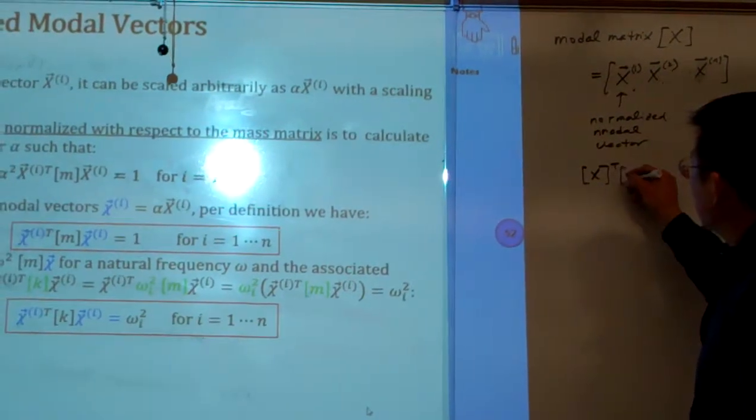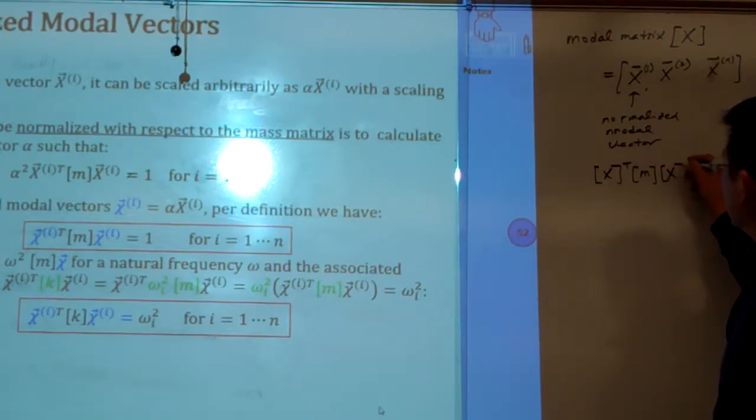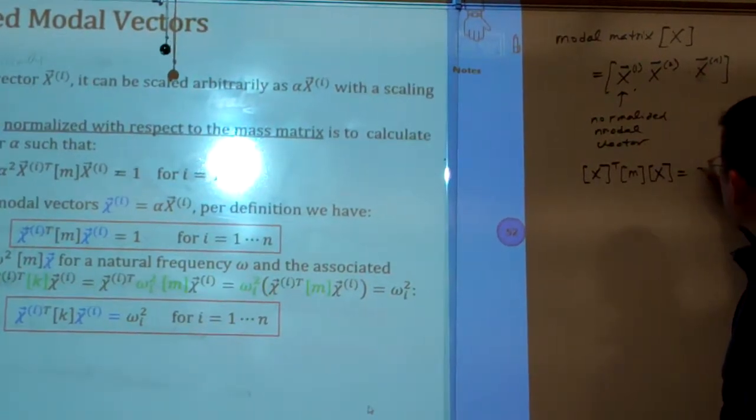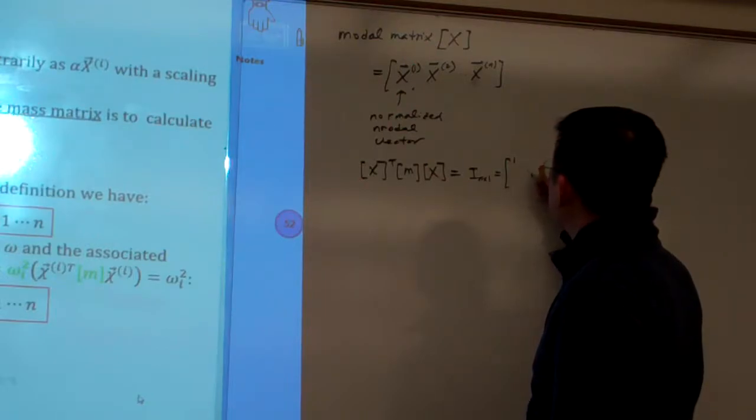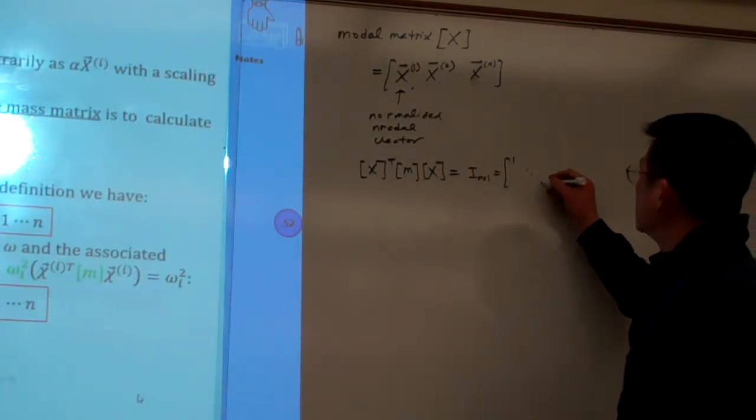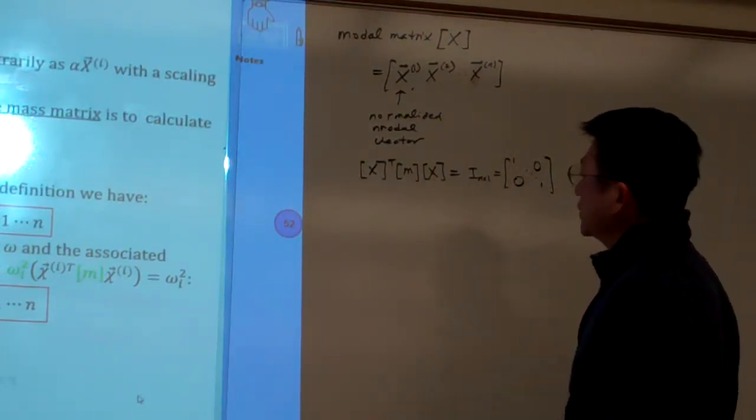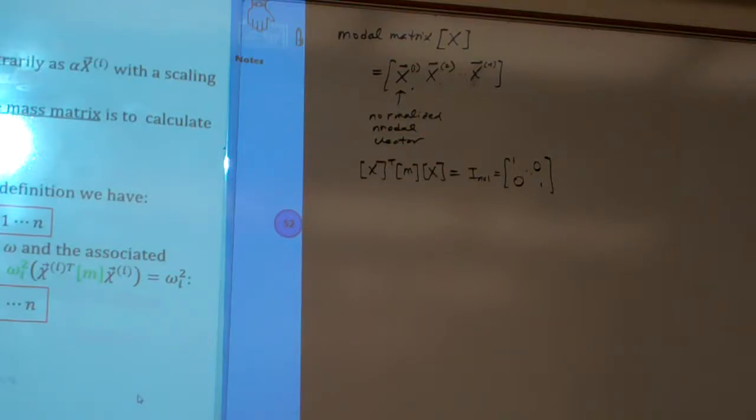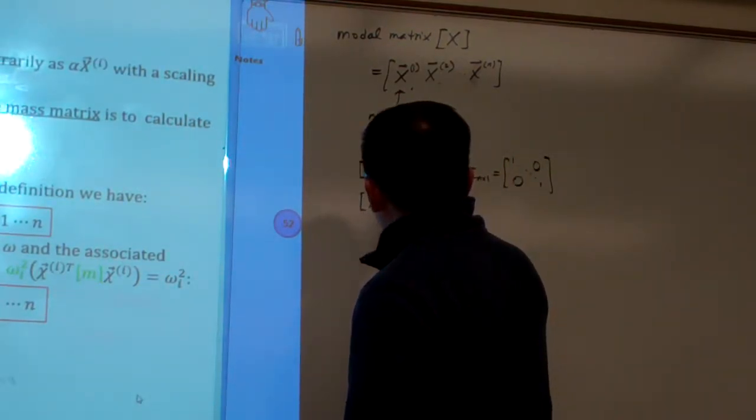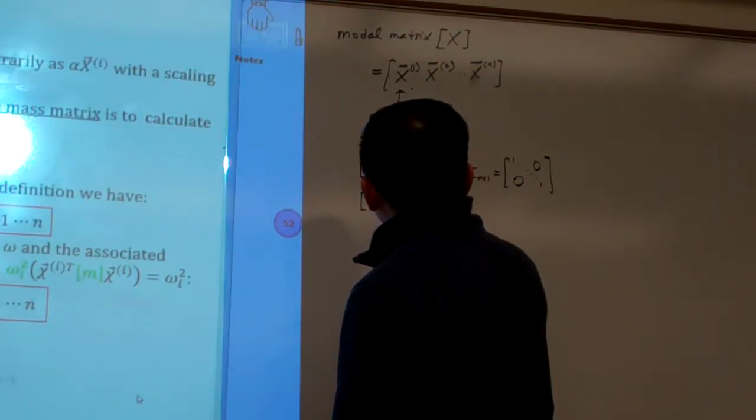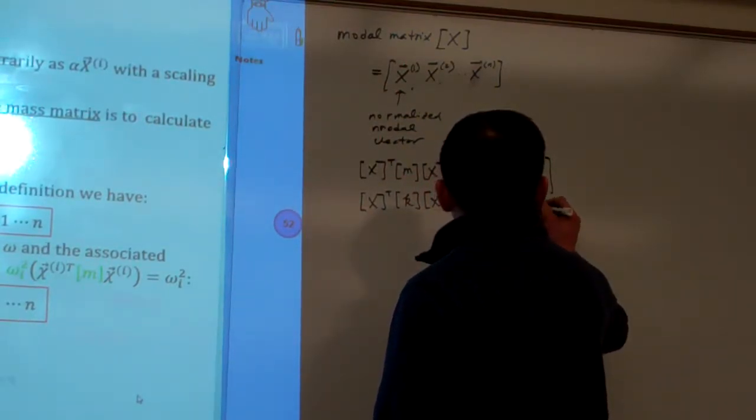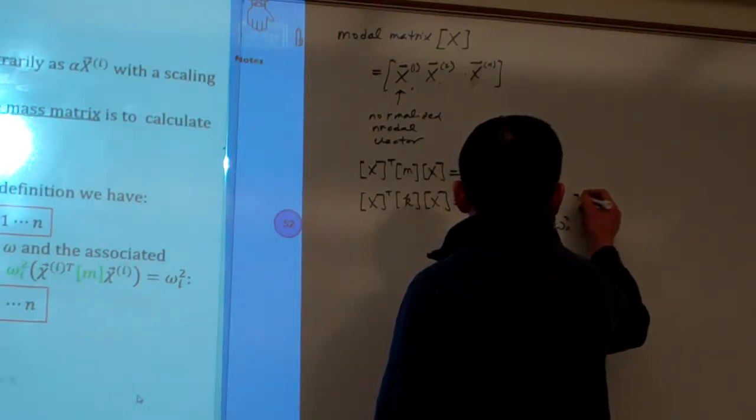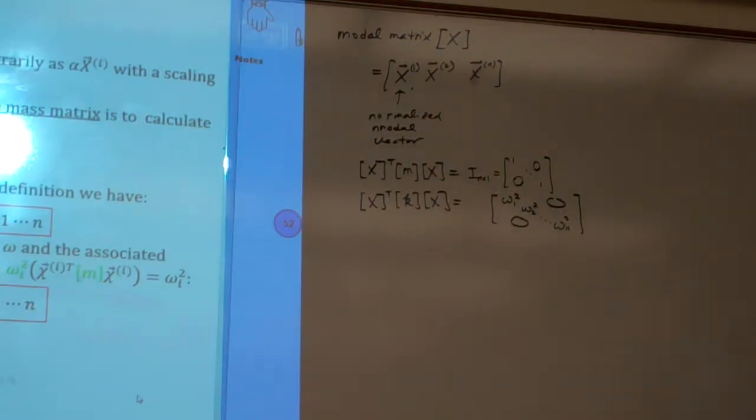Phi transpose M Phi equal to identity matrix. So with the two properties here, we can try to do some example here.